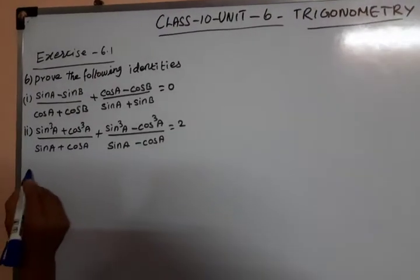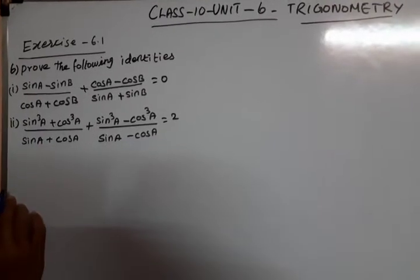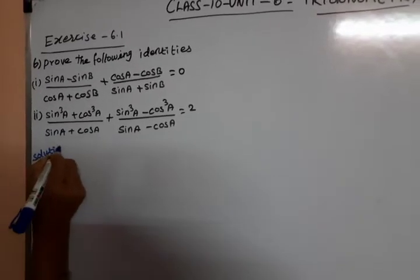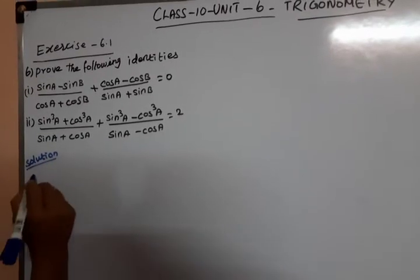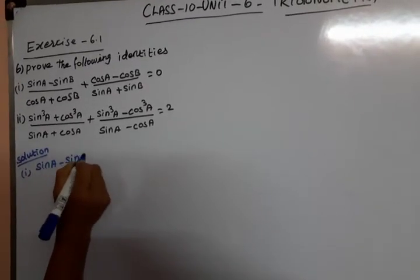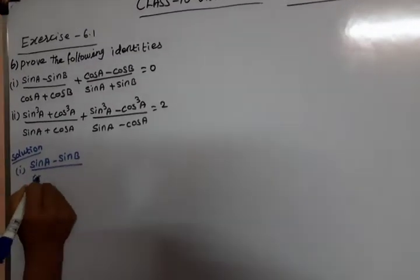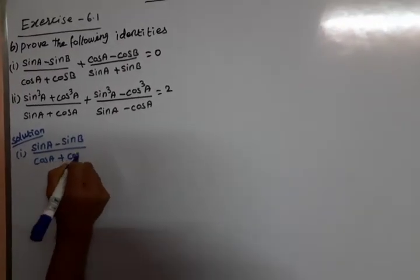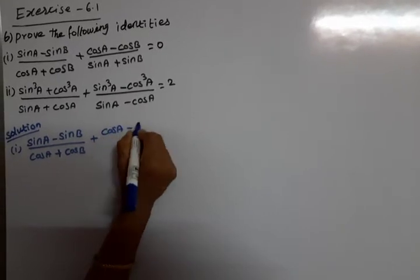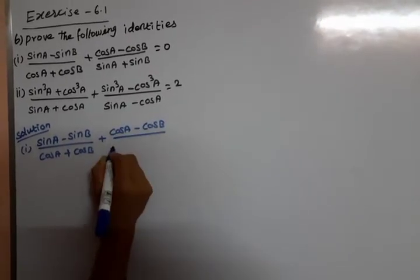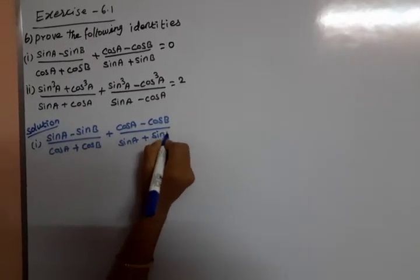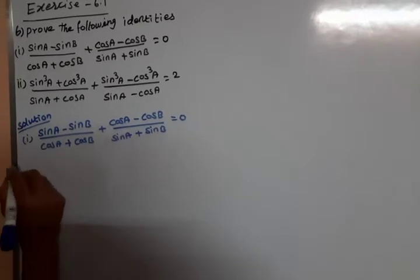Now the sixth sum has two subdivisions: prove the following identities. First subdivision: (sinA minus sinB) divided by (cosA plus cosB) plus (cosA minus cosB) divided by (sinA plus sinB) equals 0.